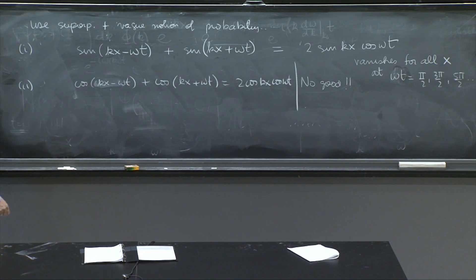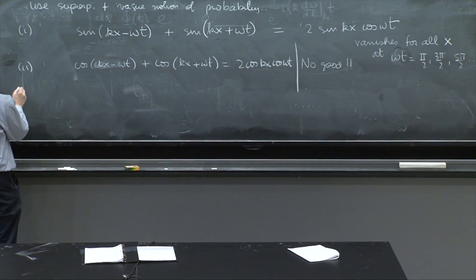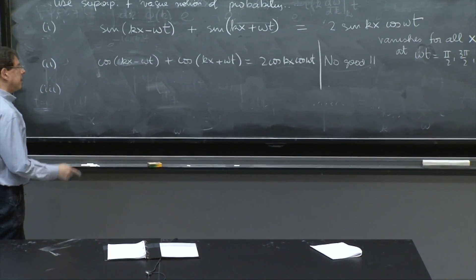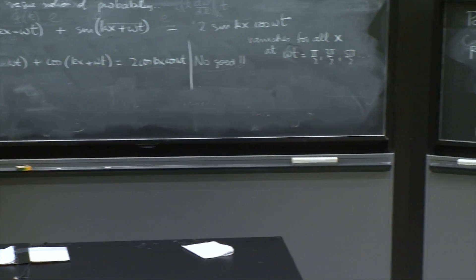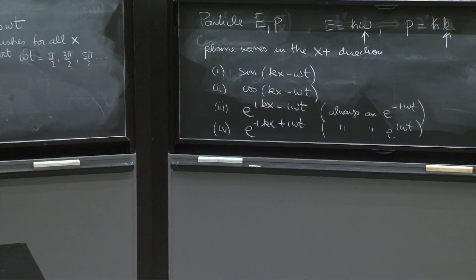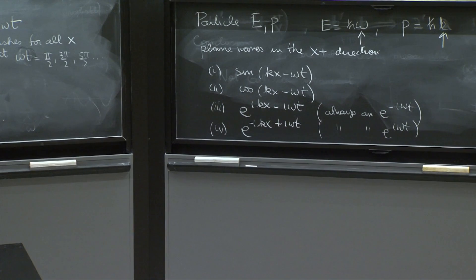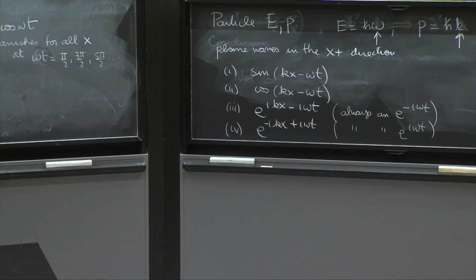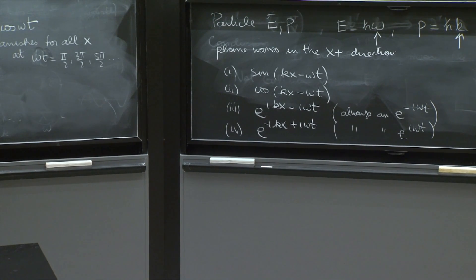Let's do case number three. Case number three is based on the philosophy that the wave that we have, e to the ikx minus i omega t, always has an e to the minus i omega t as a phase.